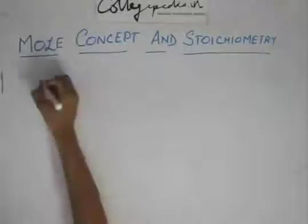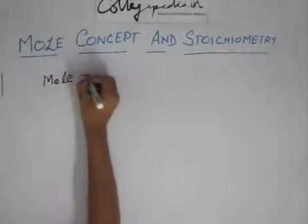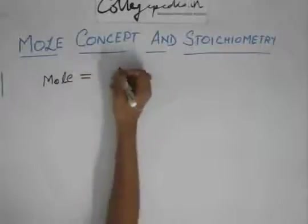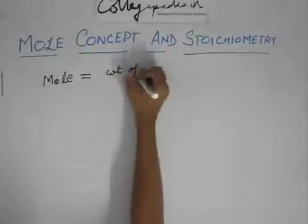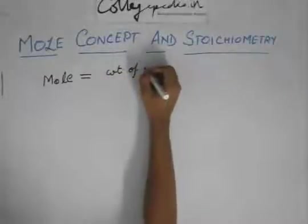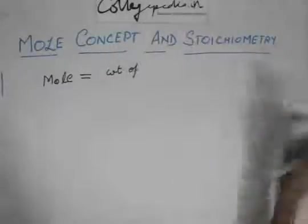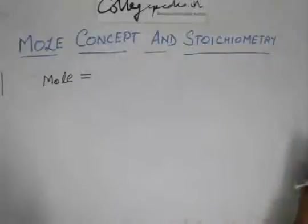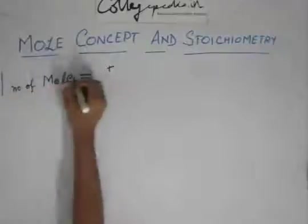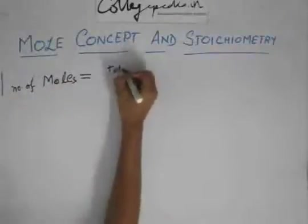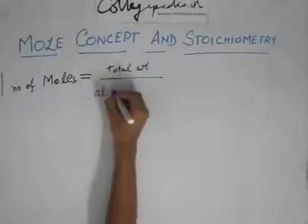Mole has a lot of definitions. To get a feel of it, you can say that mole is the total weight. The number of moles would be the total weight divided by the atomic weight or molecular weight, depending on whether it is an atom or a molecule.